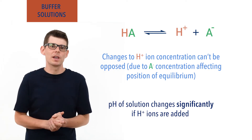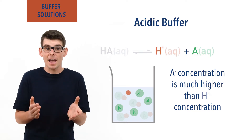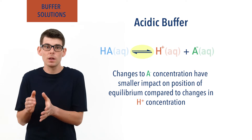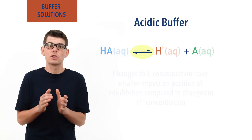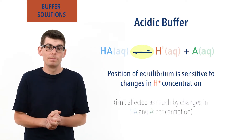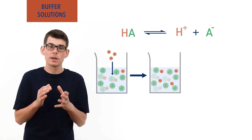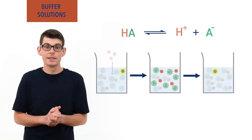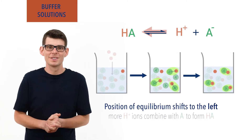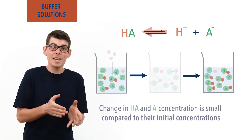In an acidic buffer solution, the A⁻ concentration in the equilibrium mixture is much, much higher than the H⁺ ion concentration. As a result, changes to A⁻ concentration have a much smaller impact on the position of equilibrium than changes to H⁺ ion concentration. The position of equilibrium is sensitive to changes in H⁺ concentration, and isn't really affected much by changes in HA and A⁻ concentration. Now if H⁺ ions are added, the position of equilibrium can move to oppose the change and try to get the H⁺ ion concentration back to what it was. It does this by shifting to the left — more H⁺ ions and conjugate base ions combine to form weak acid molecules. The fact that A⁻ and HA concentrations change as a result doesn't matter much, as compared to their initial concentrations their change is very small.